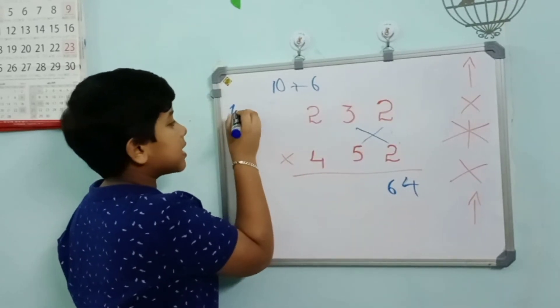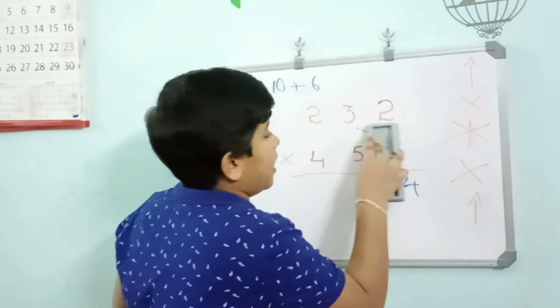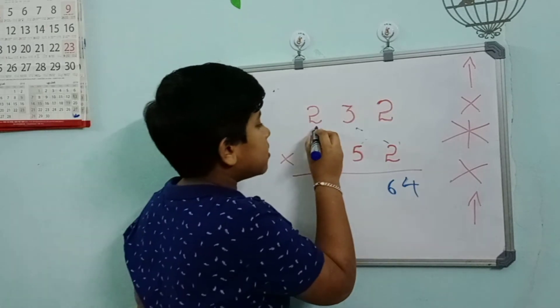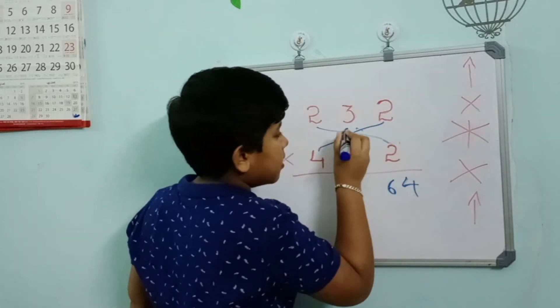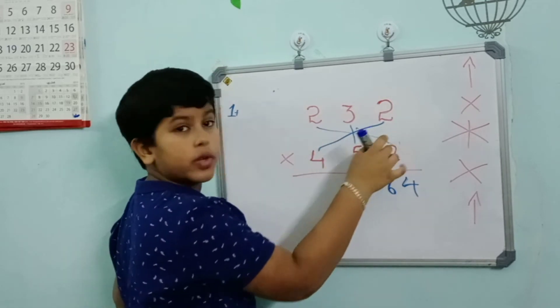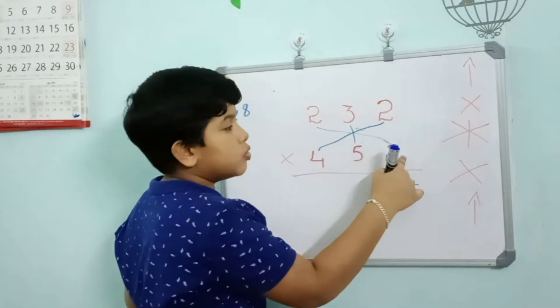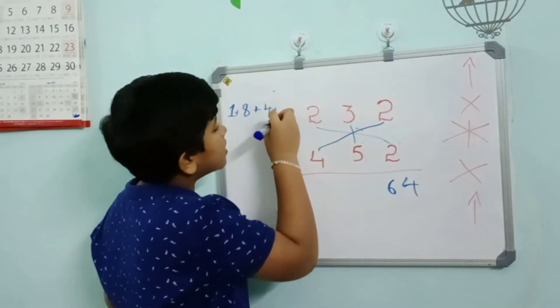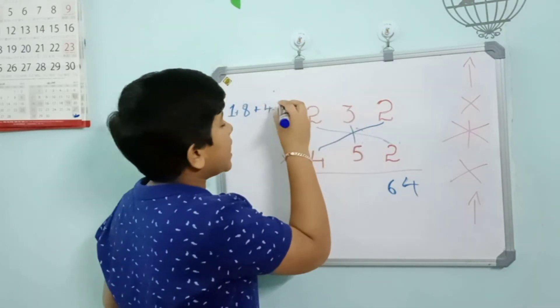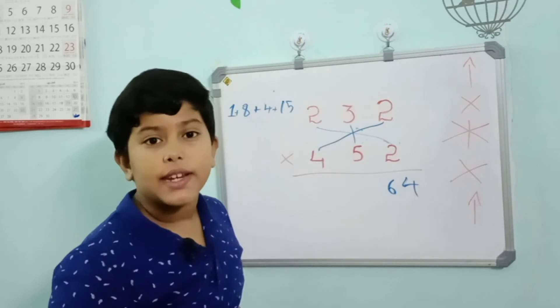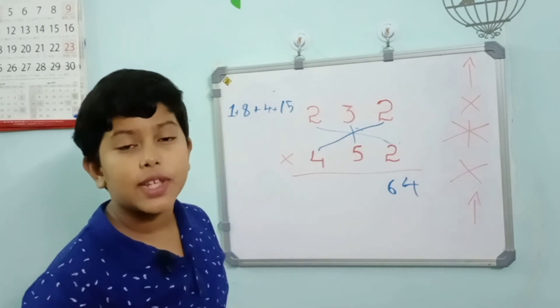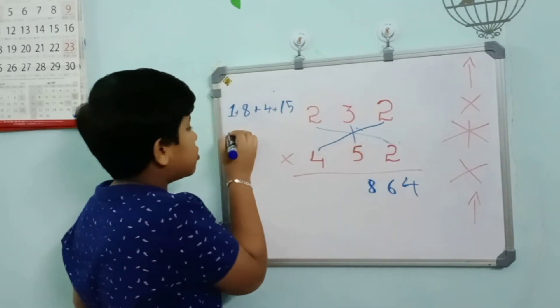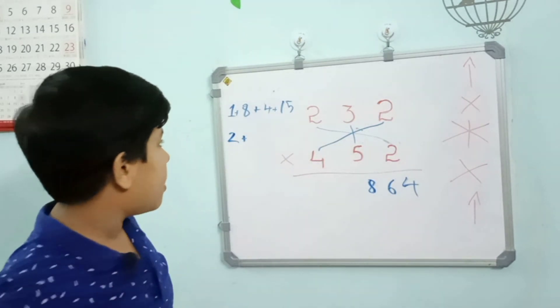The next one is the complicated one. 4 into 2 equals 8, plus 2 into 4, plus 5 into 3 equals 15. 1 plus 8 equals 9, plus 4 equals 13, plus 15 equals 28. So write 8 here and 2 as a carry forward.